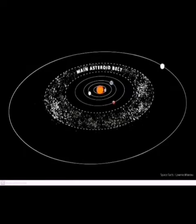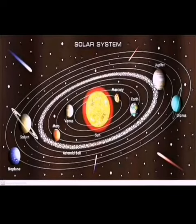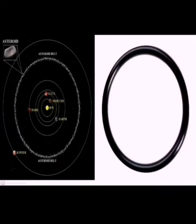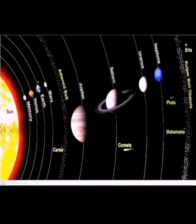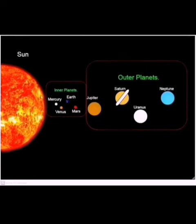Next, we are going to see about asteroid belt. What is meant by asteroid belt? There are millions and millions of asteroids rotating around our sun in a ring shape. This ring or circle shape is called the asteroid belt. This asteroid belt is located between the planets Mars and Jupiter, and it divides our 8 main planets into 2 groups.